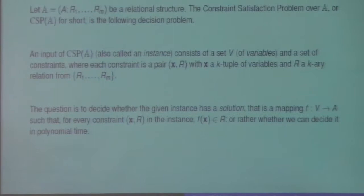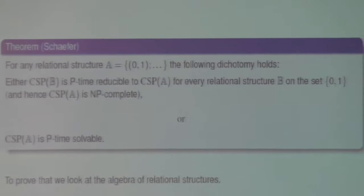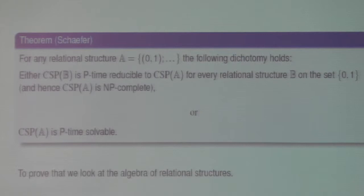The real question is whether we can decide CSP in polynomial time, or what is the complexity of this problem, because we can always check all possible mappings given enough time. By the end of the problem sets, we were able to prove Schaeffer's theorem, which says that if the universe is {0, 1}, then either CSP is very hard and NP-complete, or it is polynomial-time solvable.